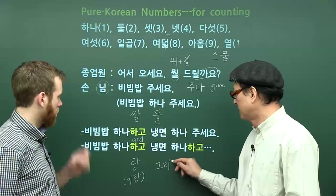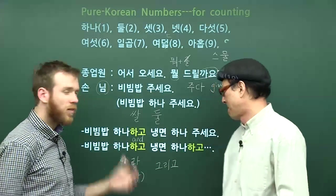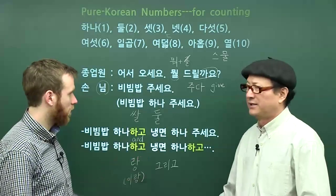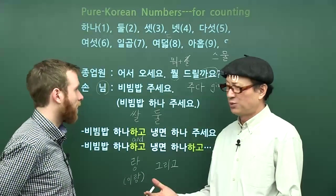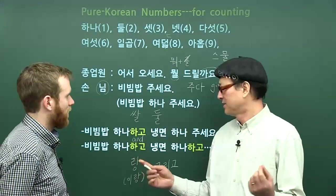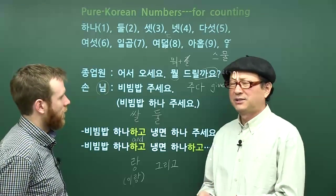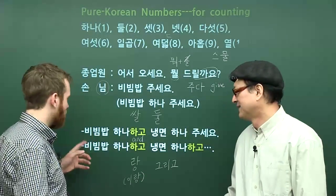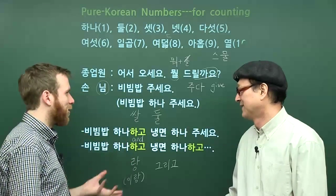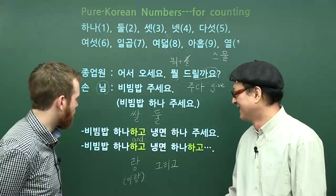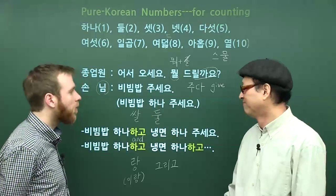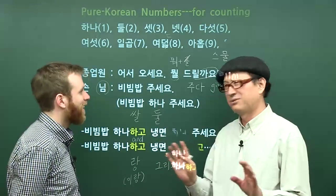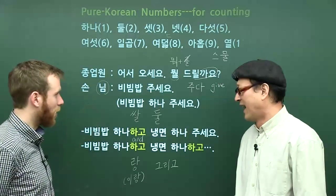그리고 — we saw this in a previous lesson to start a sentence. It just means 'and.' You can say 비빔밥 하나 그리고... but this is if you're not ready to order yet and need more time. If you are ready to order all items at once, saying 비빔밥 하나 그리고 냉면 하나 그리고 sounds strange — like stop, start, stop, start.